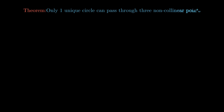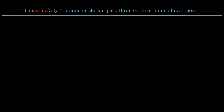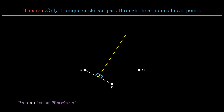Moving on to the next theorem: only one unique circle can pass through three non-collinear points. Consider ABC as three non-collinear points. Join points A and B, then construct the perpendicular bisector of AB. As the perpendicular bisector of a chord always passes through the center of the circle,